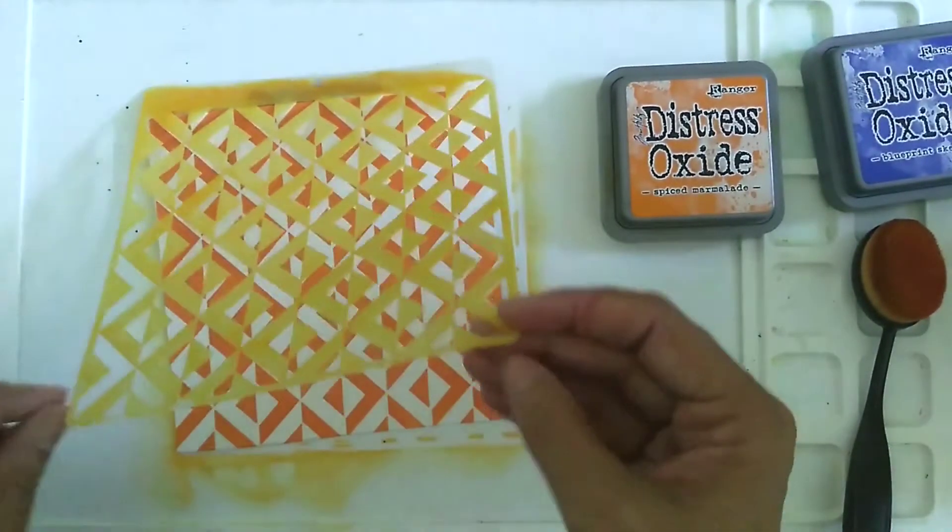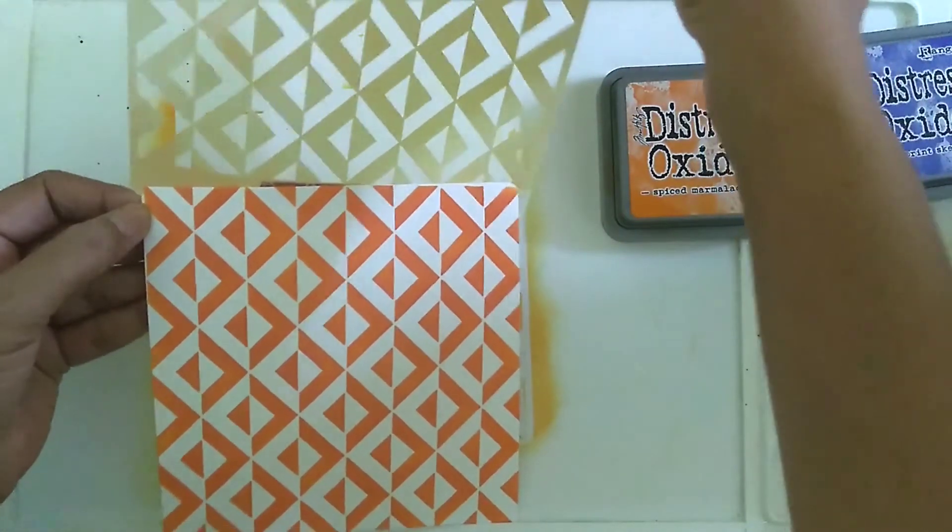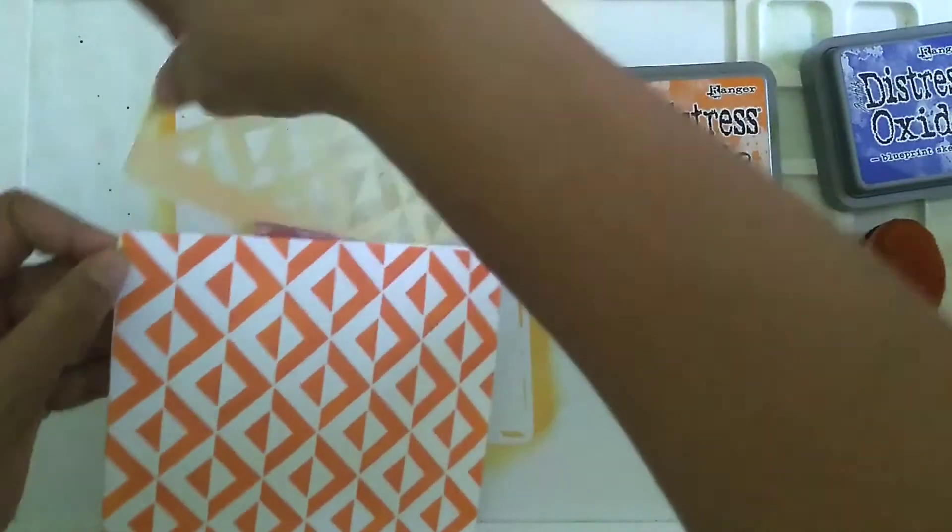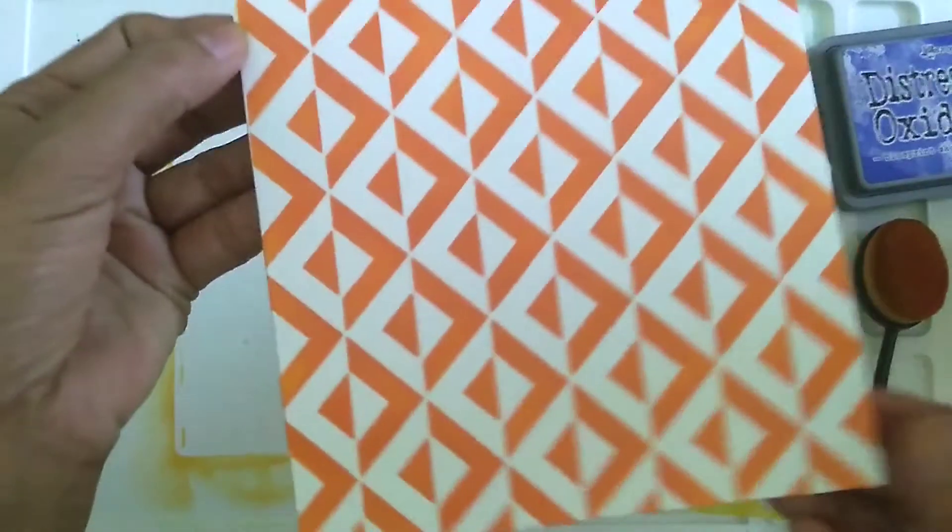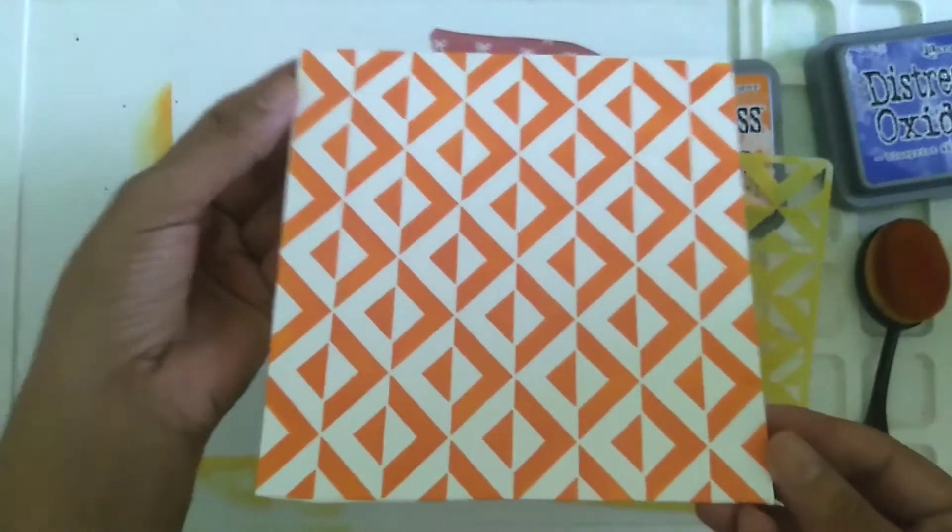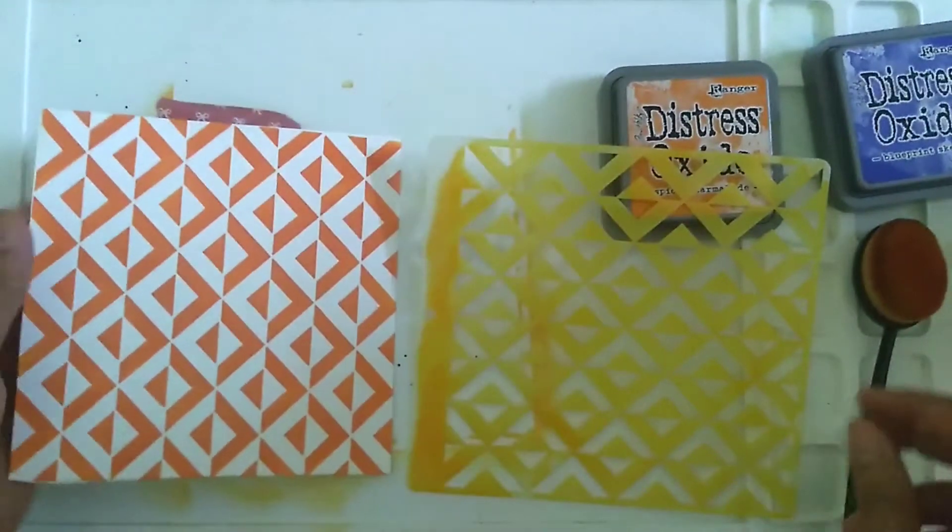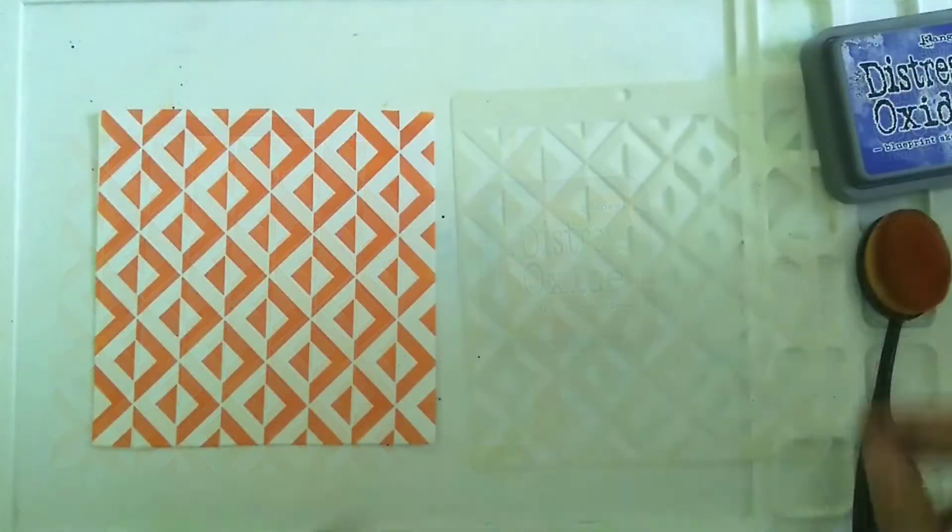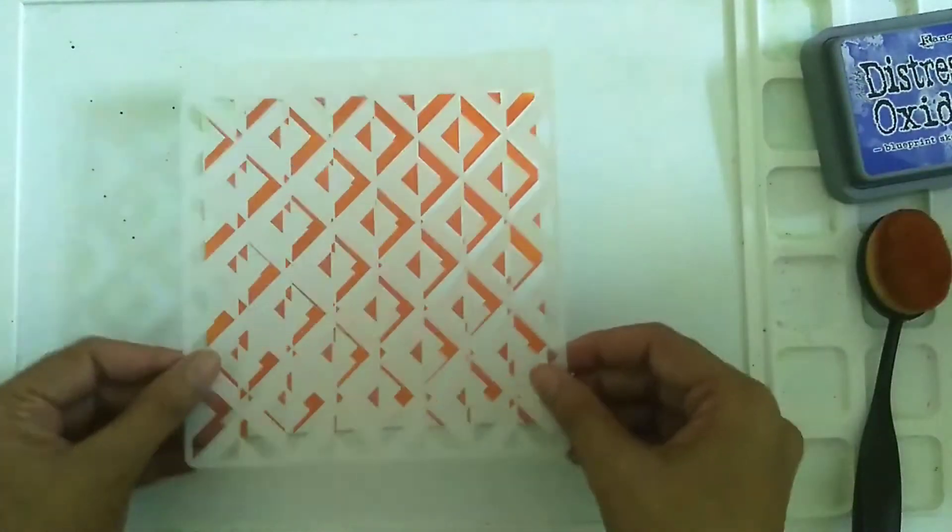There you can see a very beautiful bold background with the 3D square stencil. Honestly, this background looks good enough to be used the way it is, but we're going to take it a step further and make it into something really special. Just remember to wipe down your stencil before you use it again. Now I'm just going to let the background air dry for a little bit because I don't want the ink to smear.